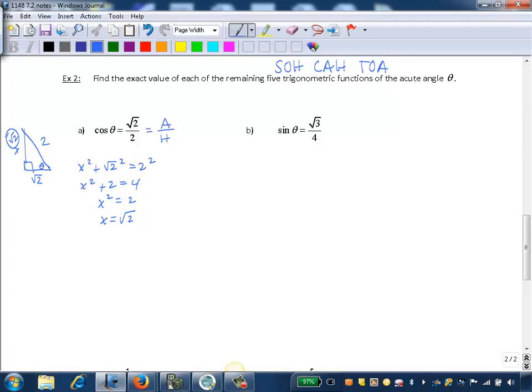Now we have all three sides and can find the remaining trig functions. Even without that remaining side, if I do the reciprocal of cosine, I can directly find secant because that's the reciprocal. So secant of theta is the reciprocal of radical 2 over 2, which is 2 over radical 2. We need to rationalize the denominator, so multiply numerator and denominator by square root of 2, giving us 2 radical 2 over 2. The 2's divide out, leaving square root of 2.